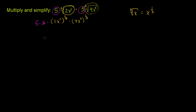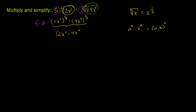Now we know from our exponent properties: if we have two things both raised to the same power and we take the product, we can just take the product first and then raise it to the power. So a to the x times b to the x is the same as (a times b) to the x. We can simplify this part as (2x squared times 4x to the 4th) to the 1/3 power. And of course, 5 times 3 is 15.